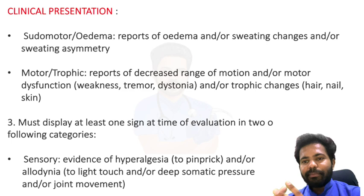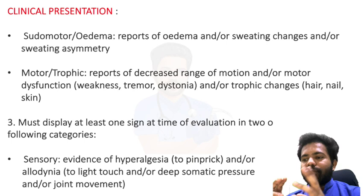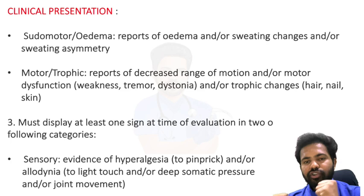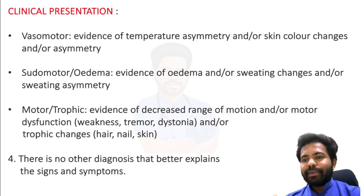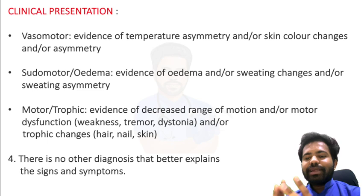The patient must also display at least one sign at the time of evaluation in two or more categories: sensory — hyperalgesia to pinprick or allodynia to deep pressure, touch, or joint movement; vasomotor — evidence of temperature asymmetry or skin color changes; pseudomotor — swelling or sweating changes; motor/trophic — hair or nail changes, motor weakness, or dystonia. If no other diagnosis better explains the signs and symptoms, it is diagnosed as CRPS.